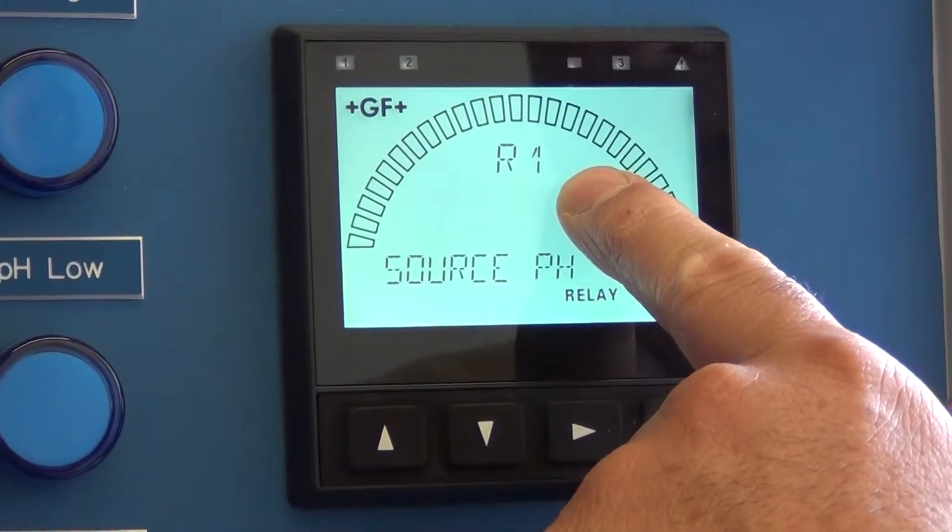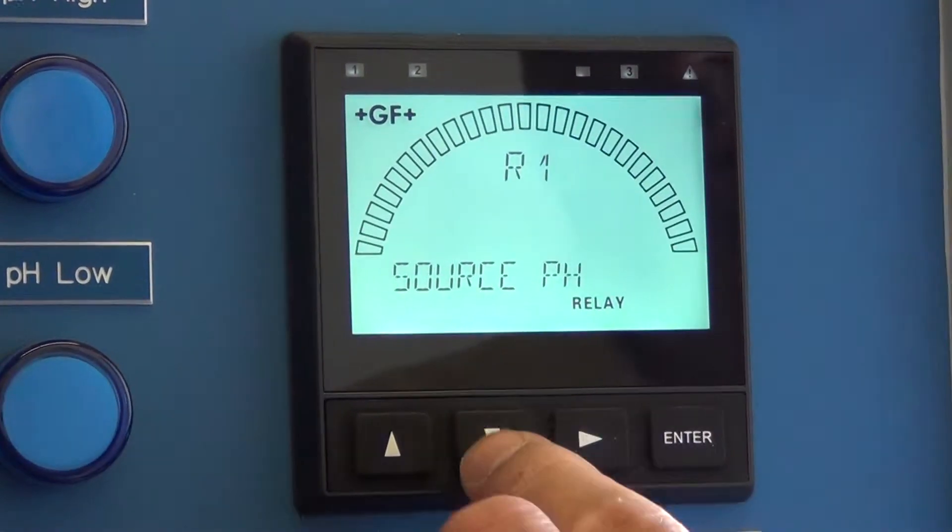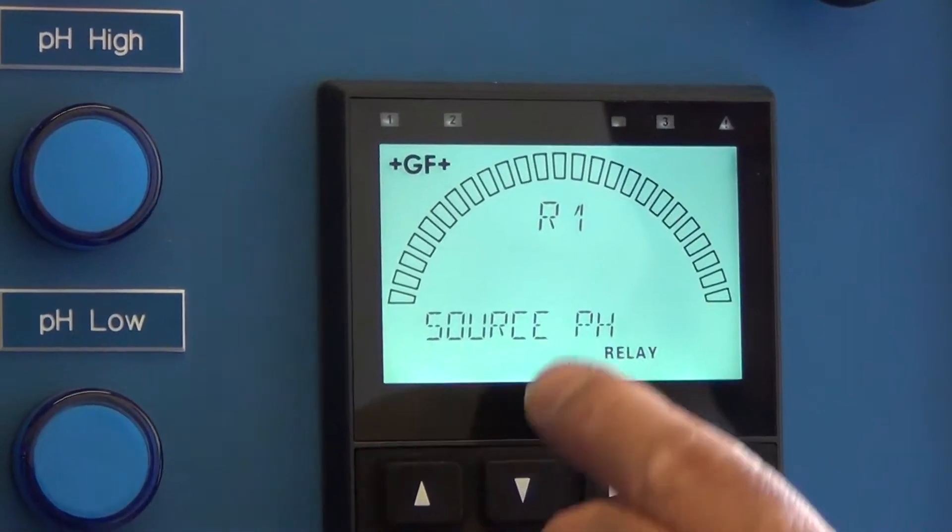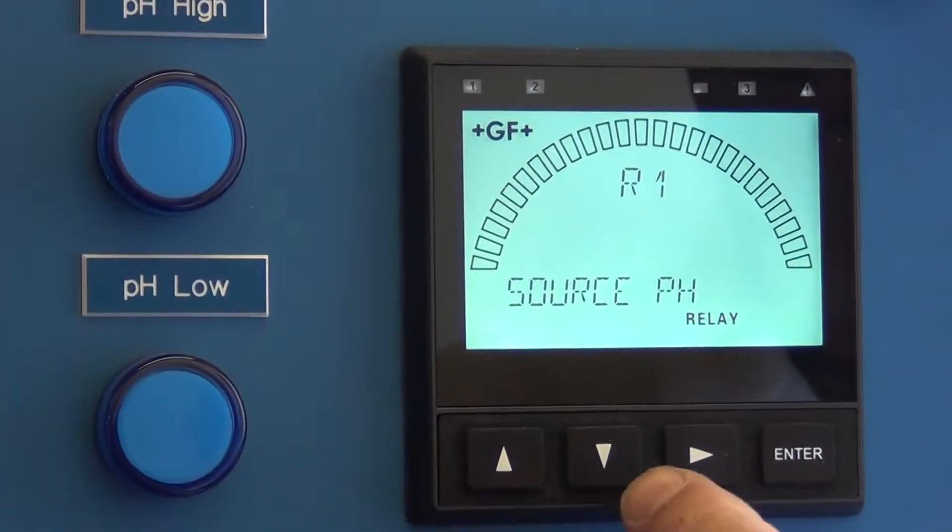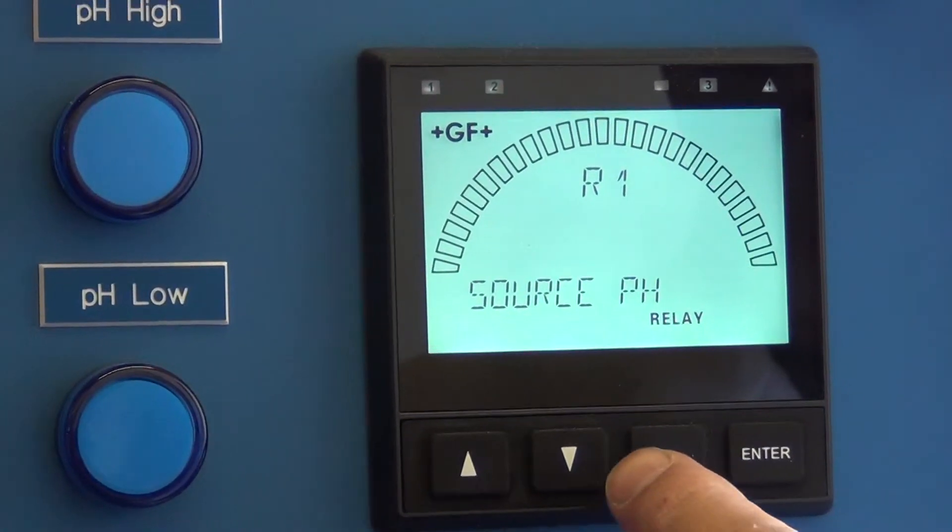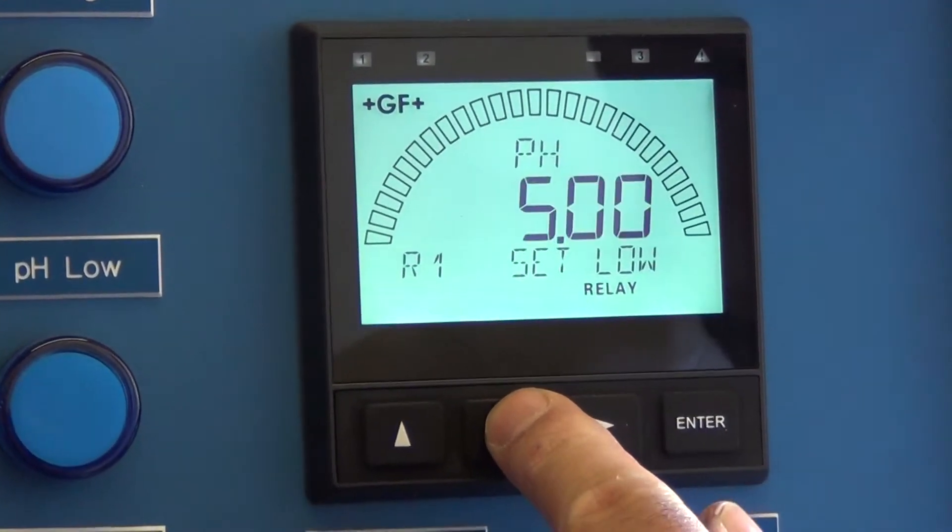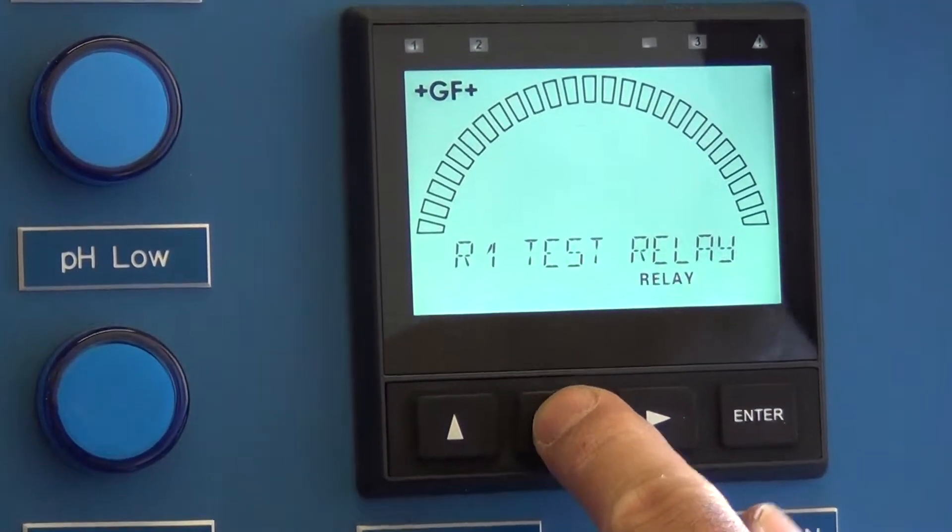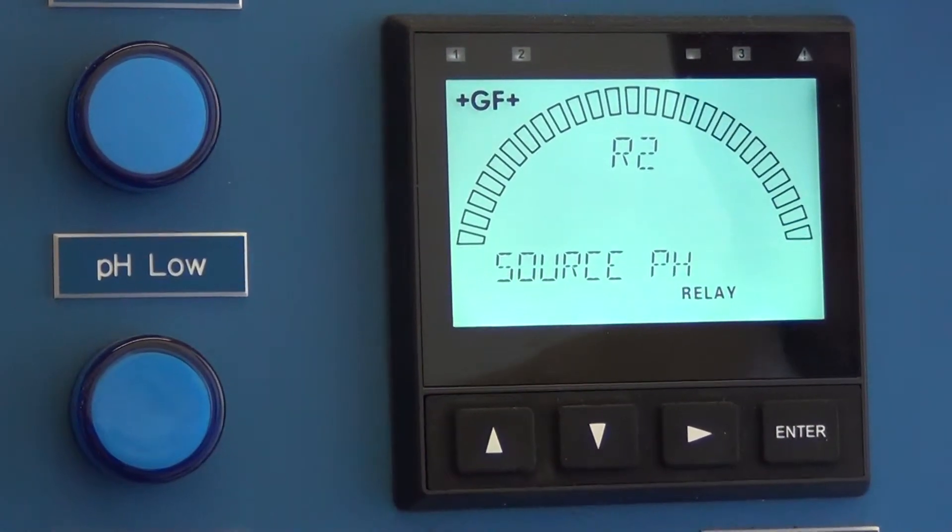R1 is the pH operating window. That's what sets your pH alarm when you're outside of R1's operating parameters. It alarms. We want to go to R2. R2 is the relay that controls the acid pump.